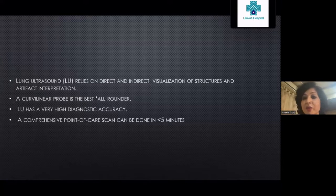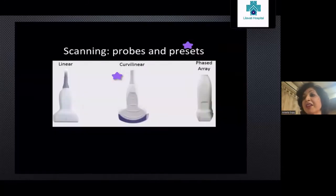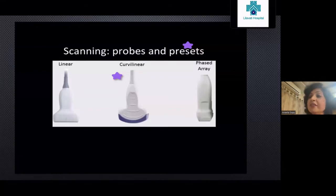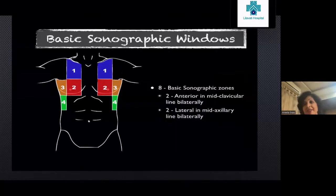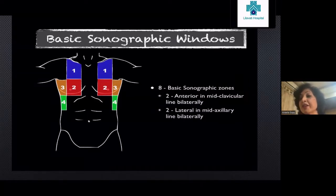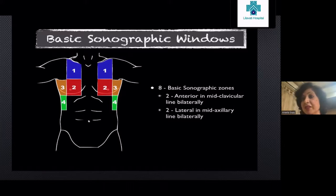There are various types of probes, but the curvilinear C51 probe is an all-rounder. Lung ultrasound has very high diagnostic accuracy; done properly, it is a comprehensive point-of-care scan that can be done in less than five minutes. We use linear, curvilinear, and phased array probes — the curvilinear wins hands down. There are basically eight zones to scan: four anterior and four posterior.